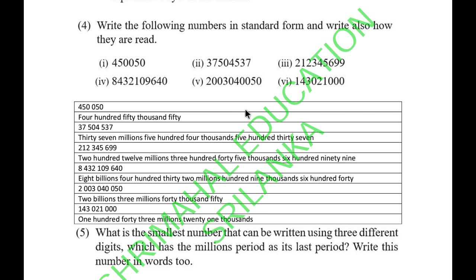Question 4 says write the following numbers in standard form and also how they are read. I'll arrange everything in standard form: 450,050; 37,504,537; 212,345,699; 8,432,109,640; 2,003,040,050; and 143,021,000.